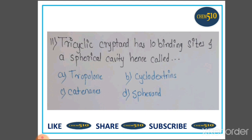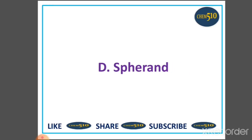Eleventh question: Tricyclic cryptands have 10 binding sites and a spherical cavity, hence called ____. Option 1: tropylium, Option 2: cyclodextrin, Option 3: catenane, Option 4: spherand. This is the straightforward definition of spherand, so option D is correct: spherand.